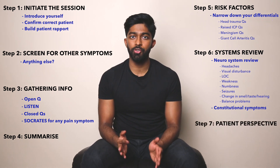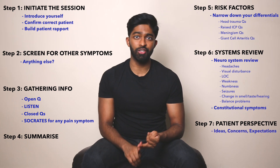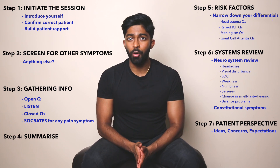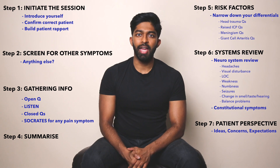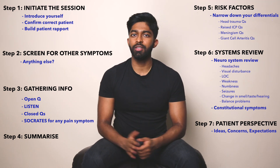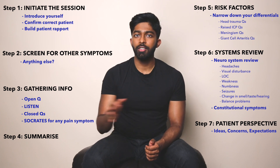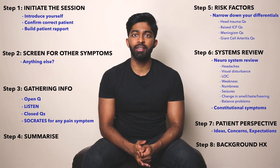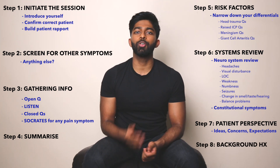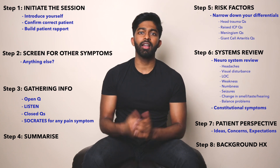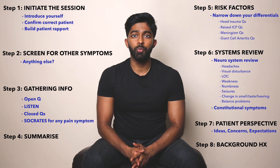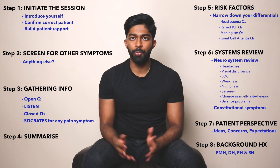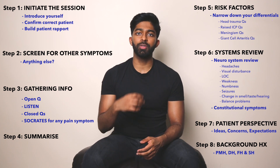On to step seven, which is the patient perspective — that includes the patient's ideas, concerns, and expectations. So: 'Have you got any idea what might be going on? Is there anything in particular you're worried about? And what are you really hoping for from today?' It's really important not to just clump all of this at the end — try and be dynamic, be fluid, and ask these questions as the patient offers you cues. And then finally, step eight is the background history, where you signpost to both your examiner and patient. So: 'I'd like to ask some background questions now. Are you normally fit and well? Do you suffer from any medical problems? Do you have any allergies?' And that's the eight-step approach tailored for a specific neurological history.